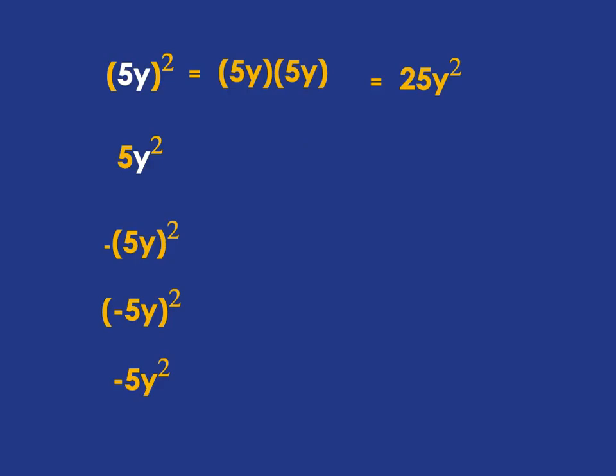Now in the next one, we've got a negative and then in brackets 5y squared. What's being squared? It's just the 5y — the negative is not in the brackets, so it's not being squared. So you've got negative, and then 5y multiplied by 5y. The negative is just there, and then 5 times 5 is 25, y times y is y squared. So our answer is negative 25y squared.